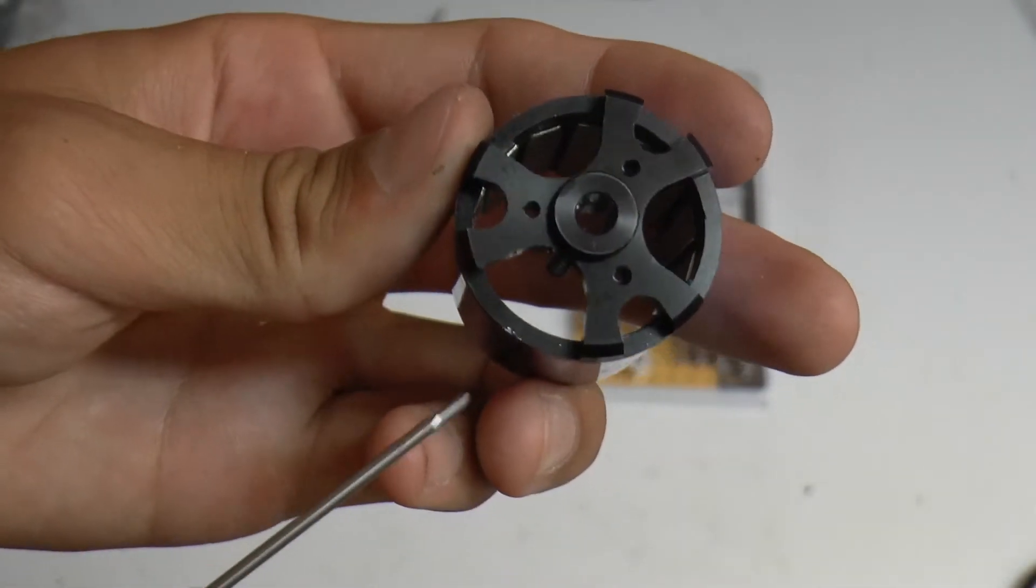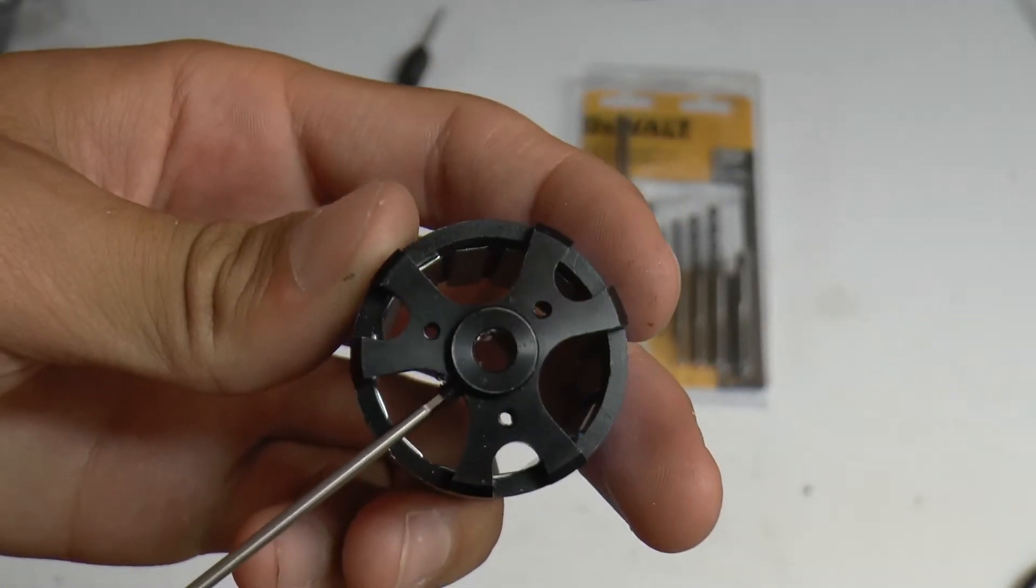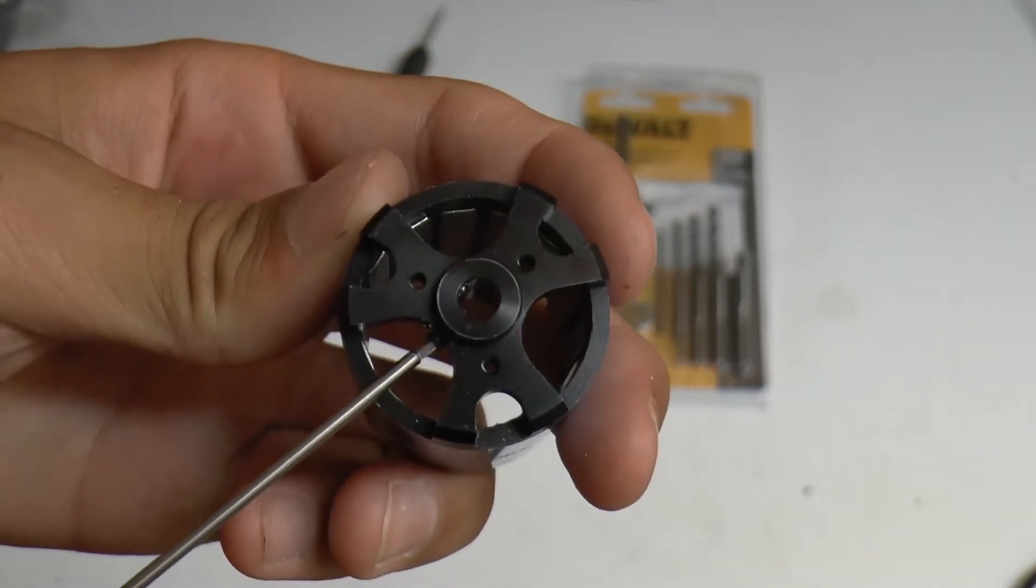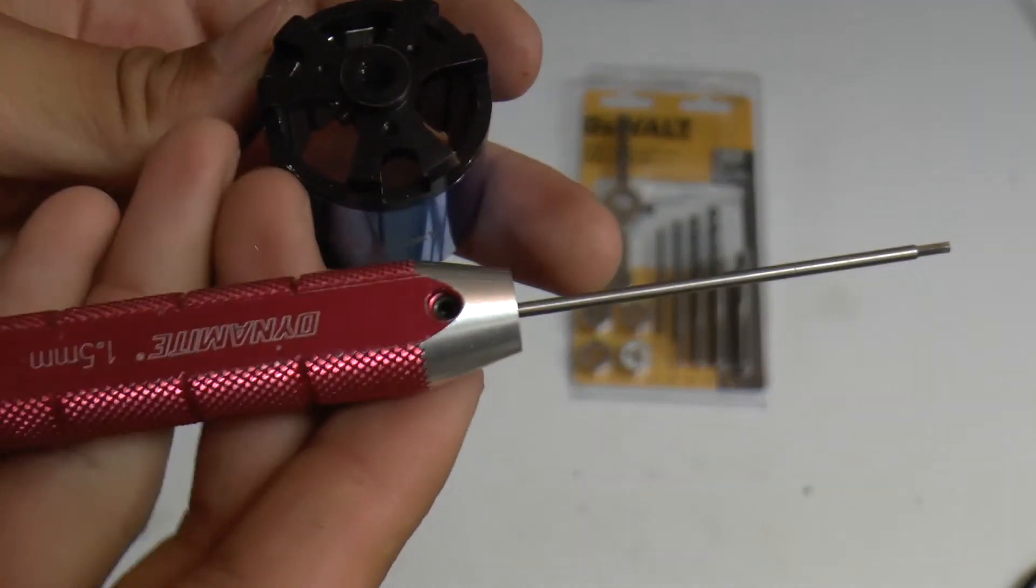Now go ahead and start inserting the larger 3mm grub screw with a 1.5mm hex wrench.